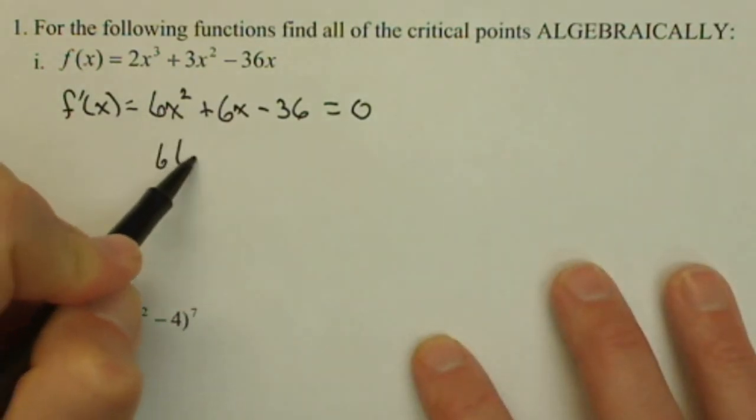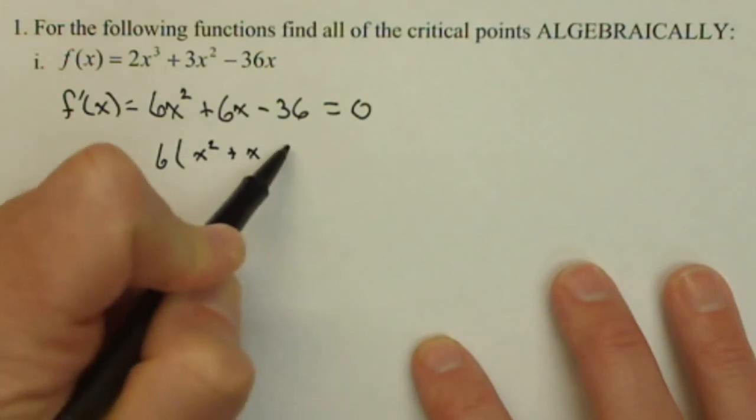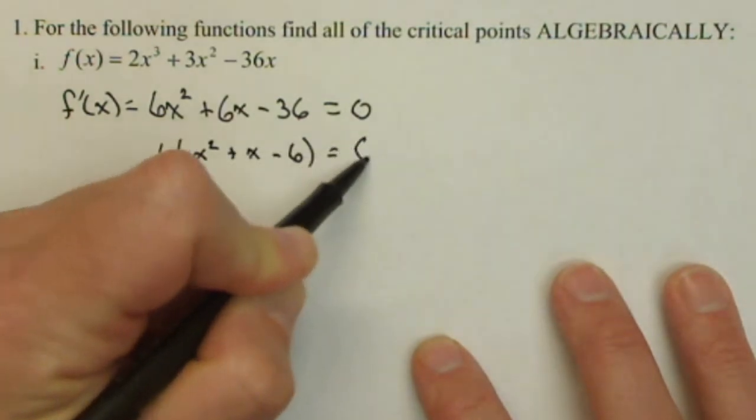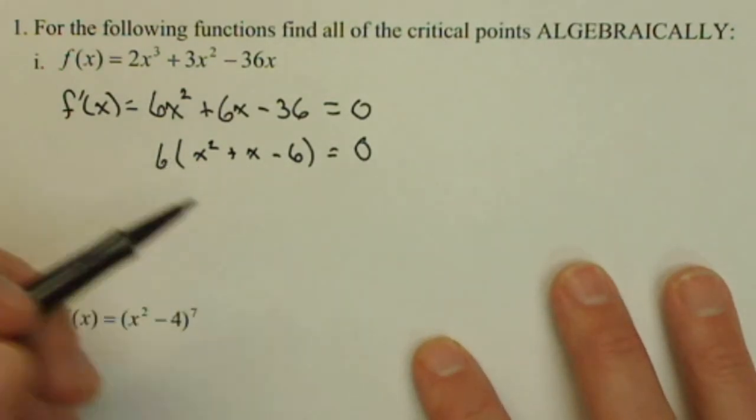Now here I notice I can factor a 6 out, so I get x² + x - 6. Now if this will factor, I'll factor it. If not, it's a quadratic, I'll use the quadratic formula.